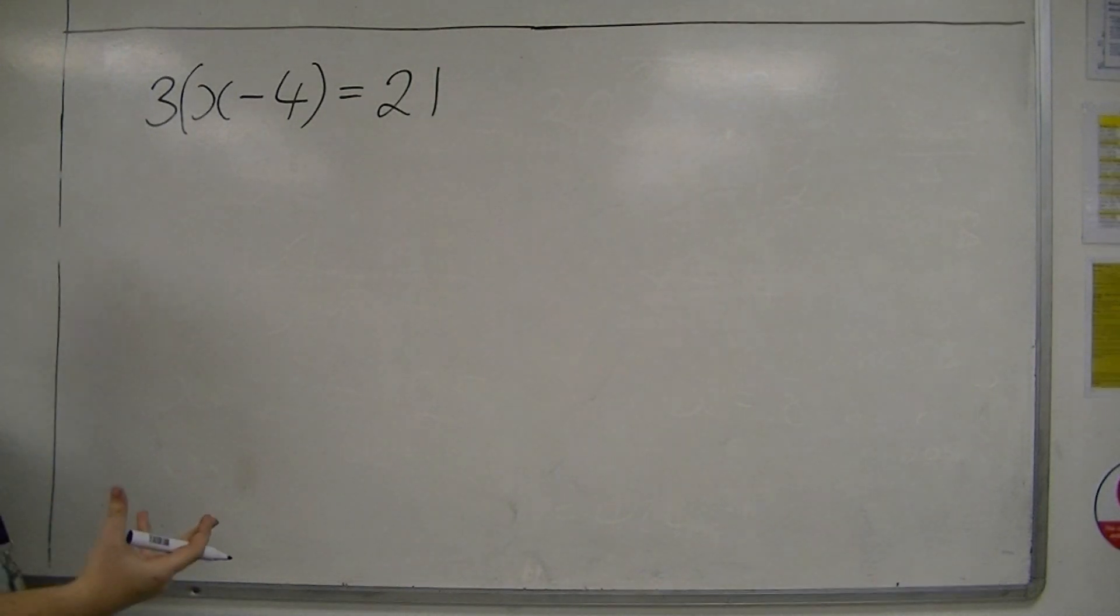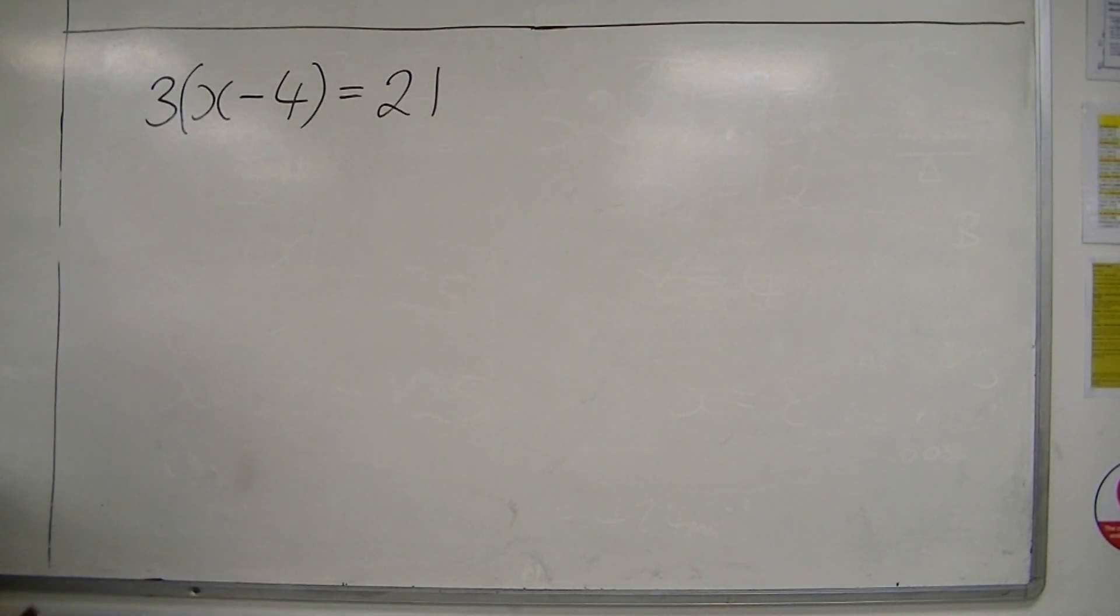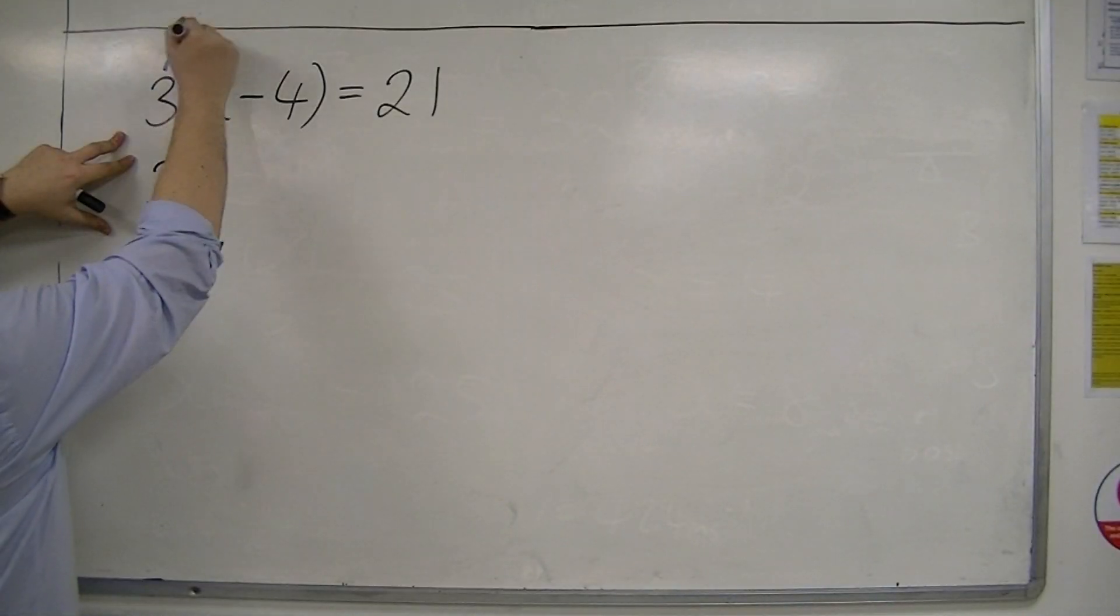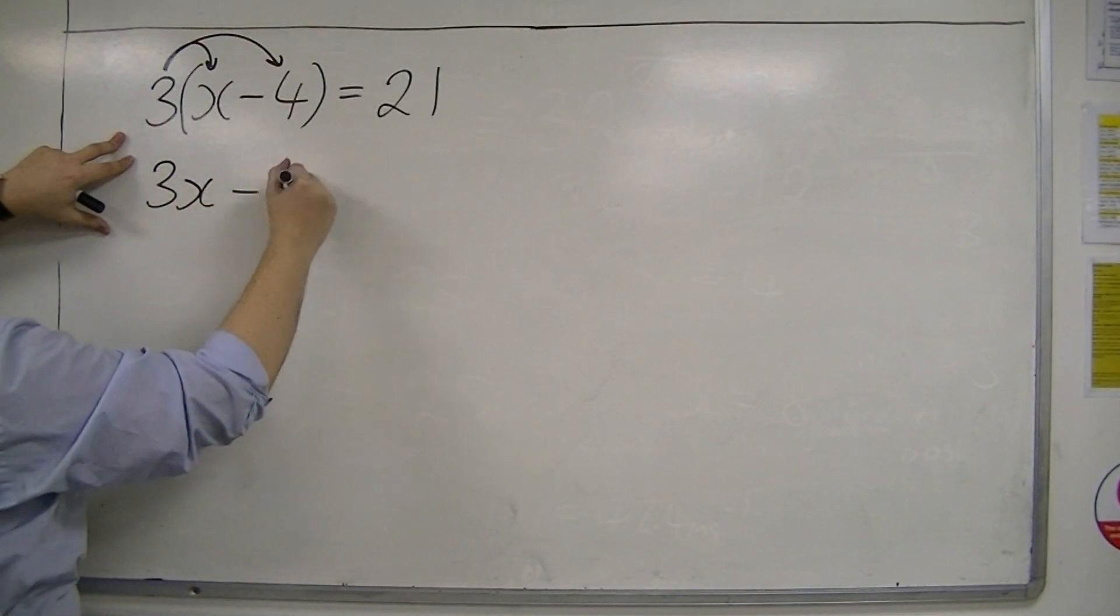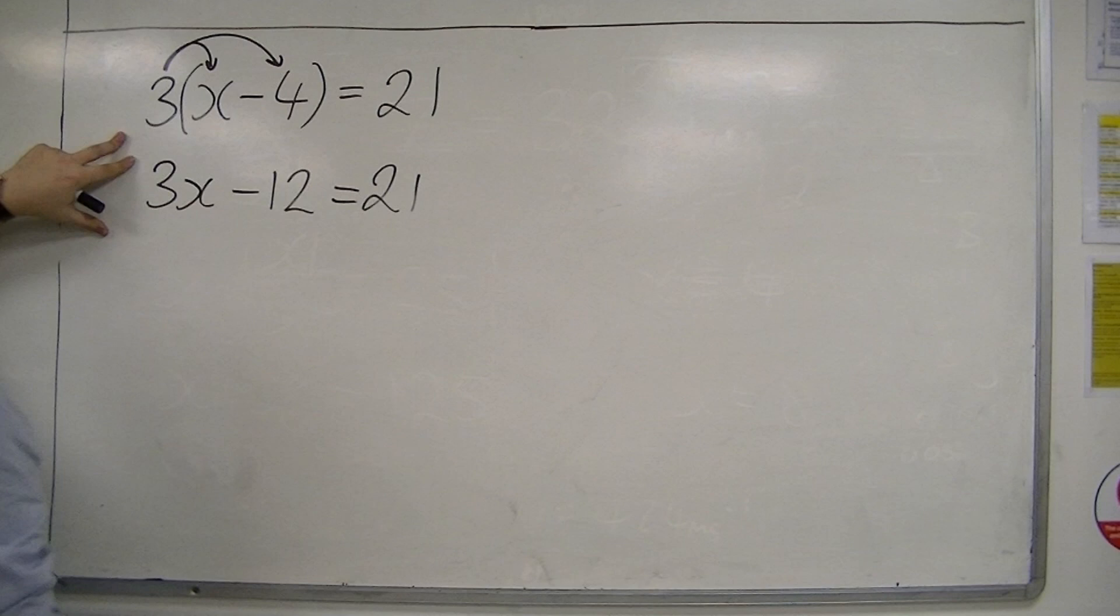There is another way of doing it, and if you've been taught to do it another way in this case, then so be it, but this is the way that I like to run through it, just to make sure we don't cause too much confusion. So we've got three lots of x is 3x, and three lots of minus four is minus twelve, which is equal to twenty-one.